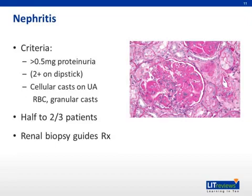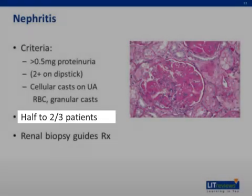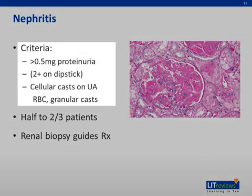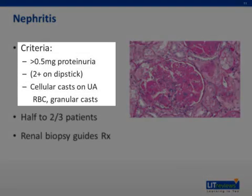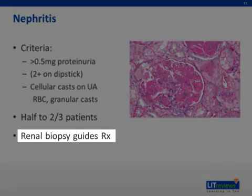Nephritis. One of the more severe clinical manifestations of SLE is renal involvement, which affects up to two-thirds of lupus patients. For classification purposes, lupus nephritis is defined as 0.5 grams of proteinuria per day, or the presence of casts noted on a urinalysis. A renal biopsy is important not only for staging the disease, but also for helping to guide treatment decisions.